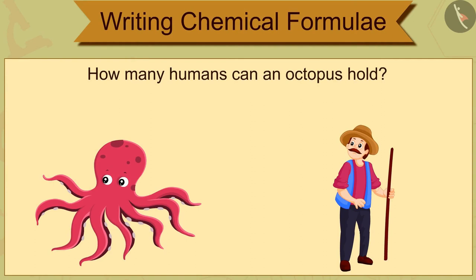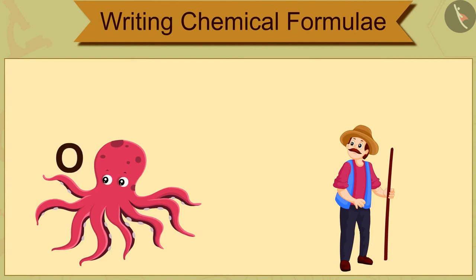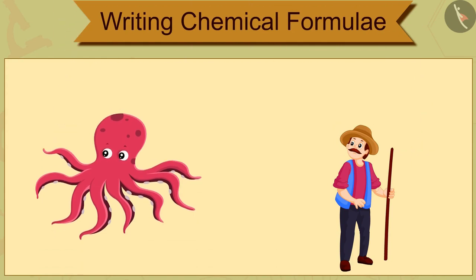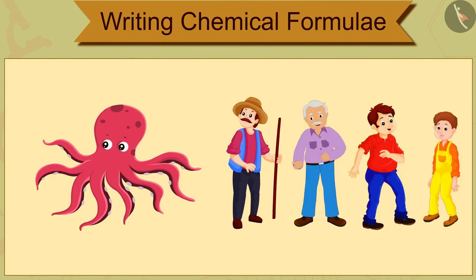How many humans can an octopus hold? If we represent octopus as O and humans with H symbols, can you write a formula for this combination?